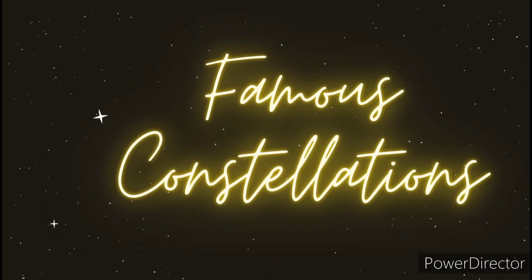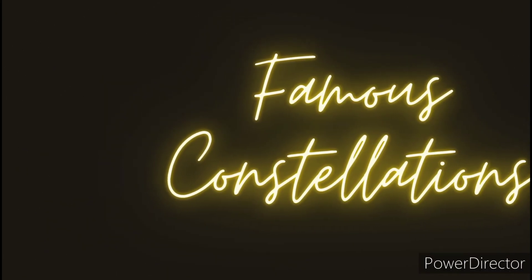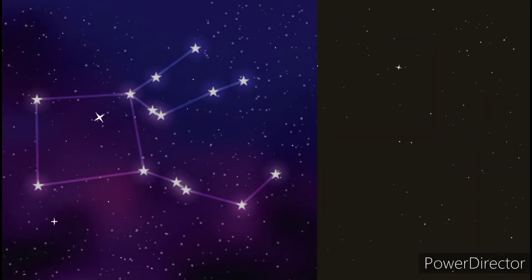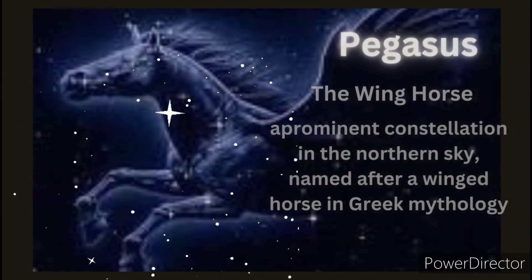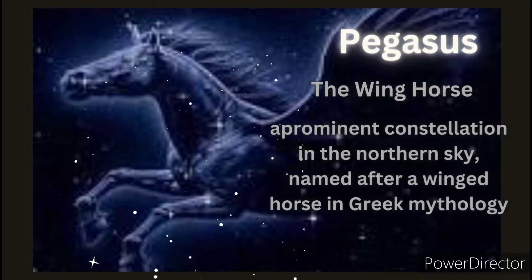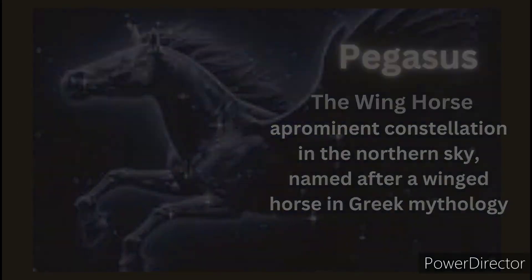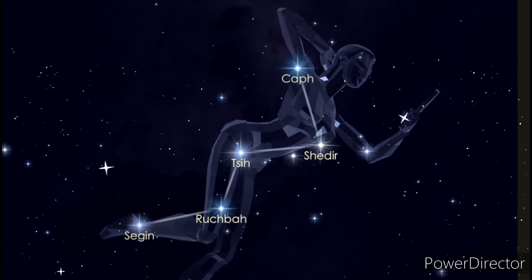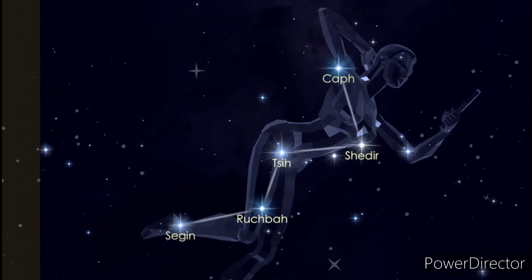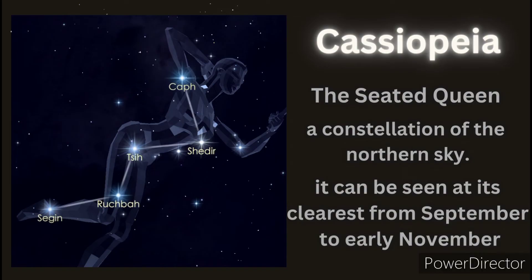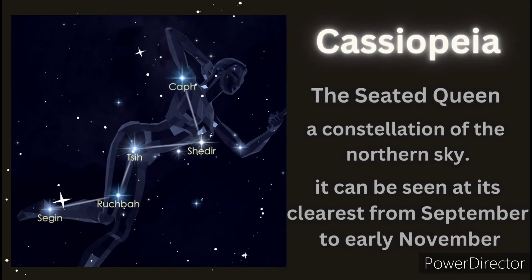Here are some famous constellations. The first is Pegasus, also known as the winged horse. It is a prominent constellation in the northern sky named after a winged horse in Greek mythology. The next is Cassiopeia, also known as the Seated Queen. It is a constellation of the northern sky and can be seen most clearly from September to early November.